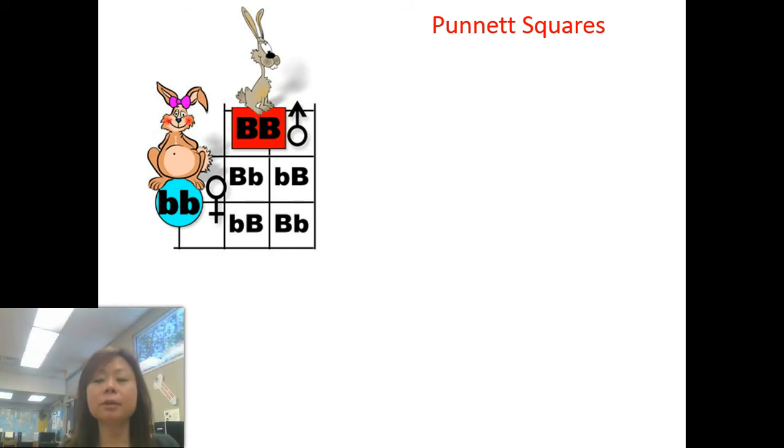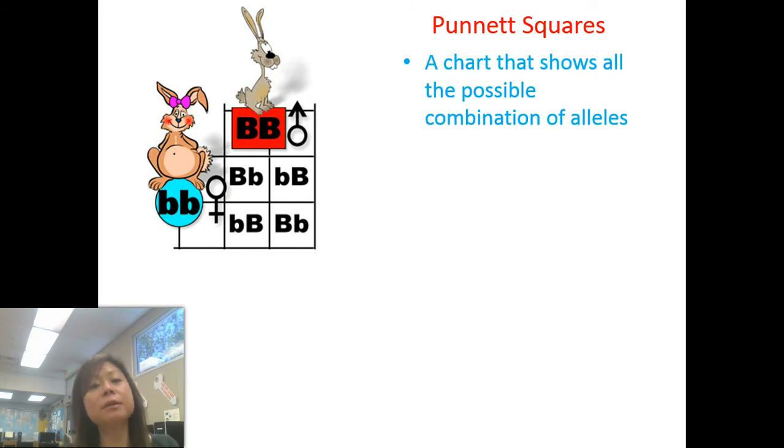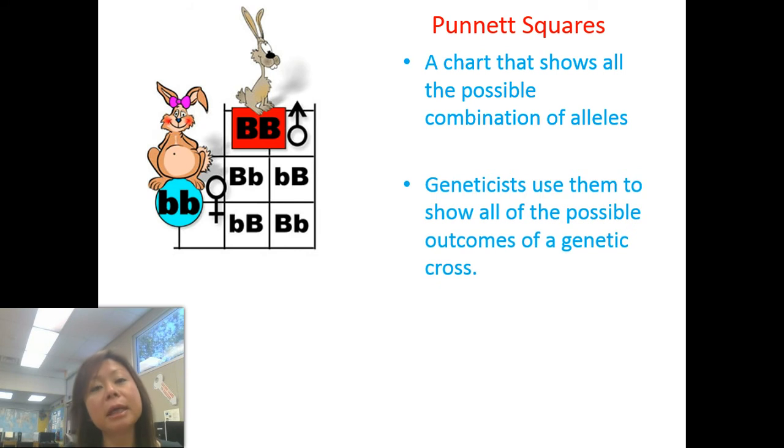This chart is called a Punnett Square, and it shows all the possible combinations of alleles for offspring from a cross between two organisms. Geneticists use these to predict what traits a child may be born with. It's kind of like a multiplication chart. You put the alleles of one parent on top.